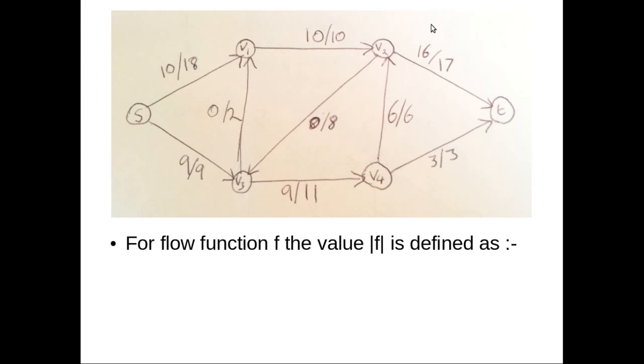So for a flow function F, the value |f| is defined as the total sum from S to V minus the total sum of flow from V to S. In this case, the value |f| is equal to the flow from S to V1 plus the flow from S to V3, which in this case is 10 plus 9, which equals 19.